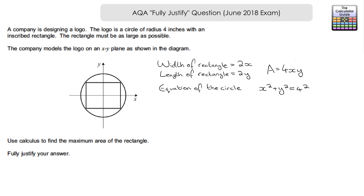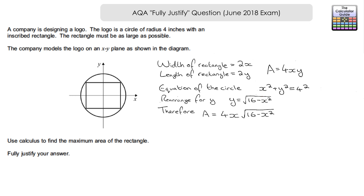Rearranging the circle equation gives y = √(16 − x²). Substituting that into the area equation gives: Area = 4x√(16 − x²). We're now thinking about maximizing this area.